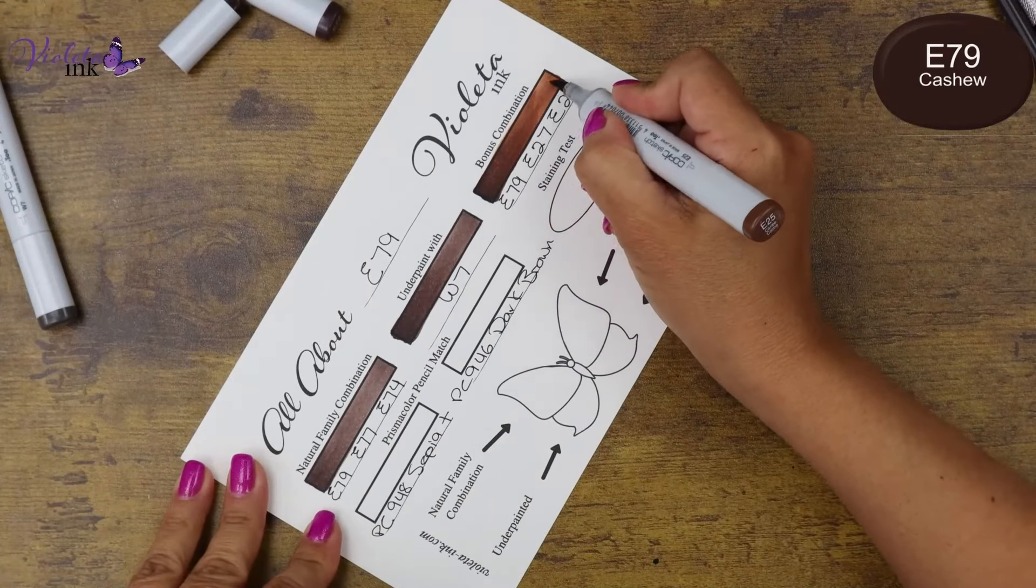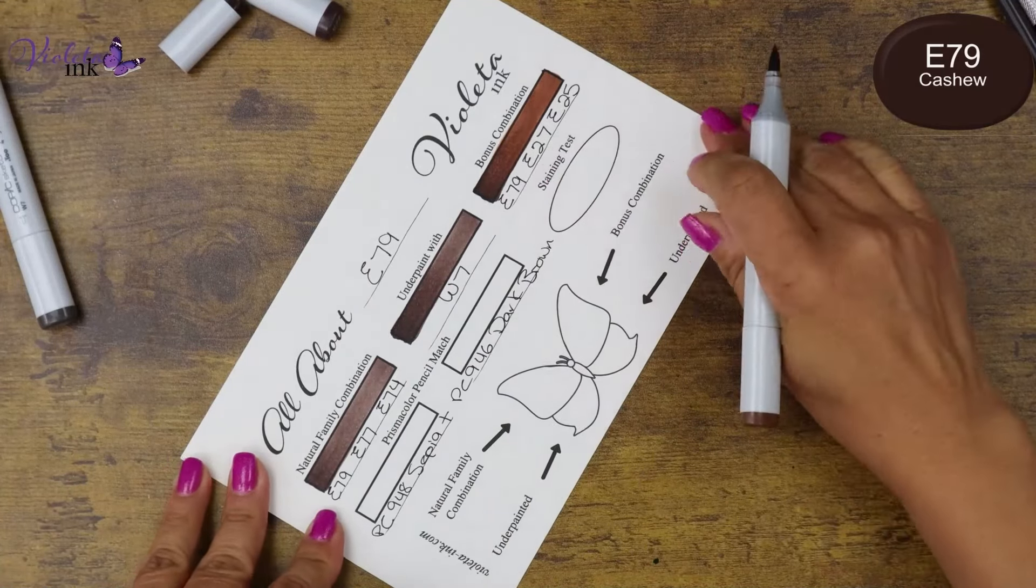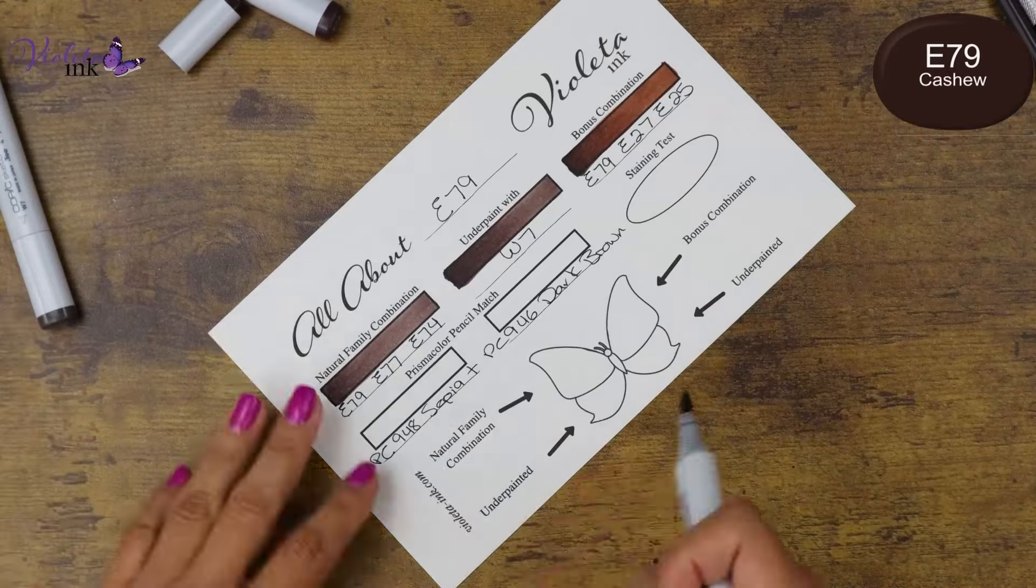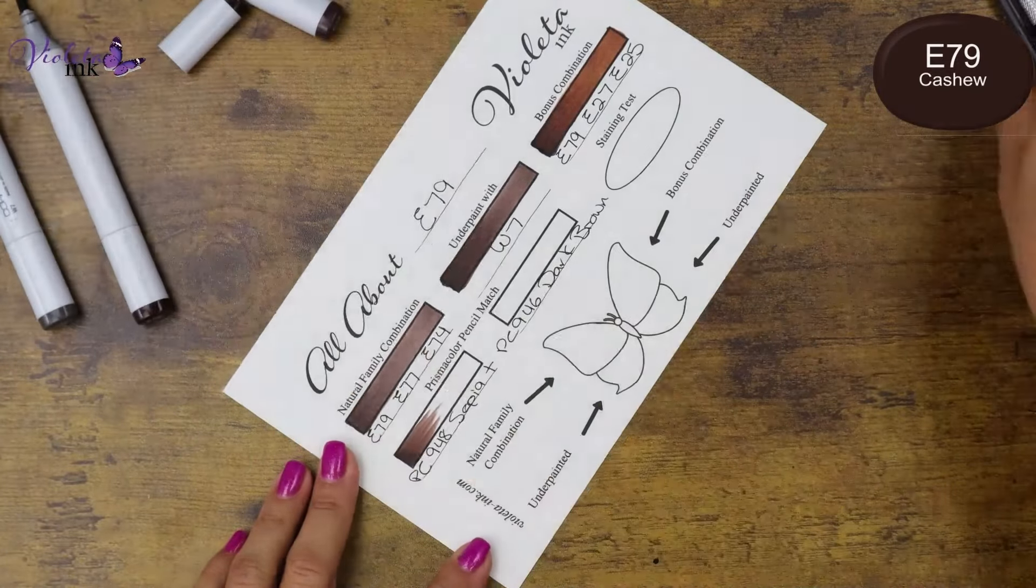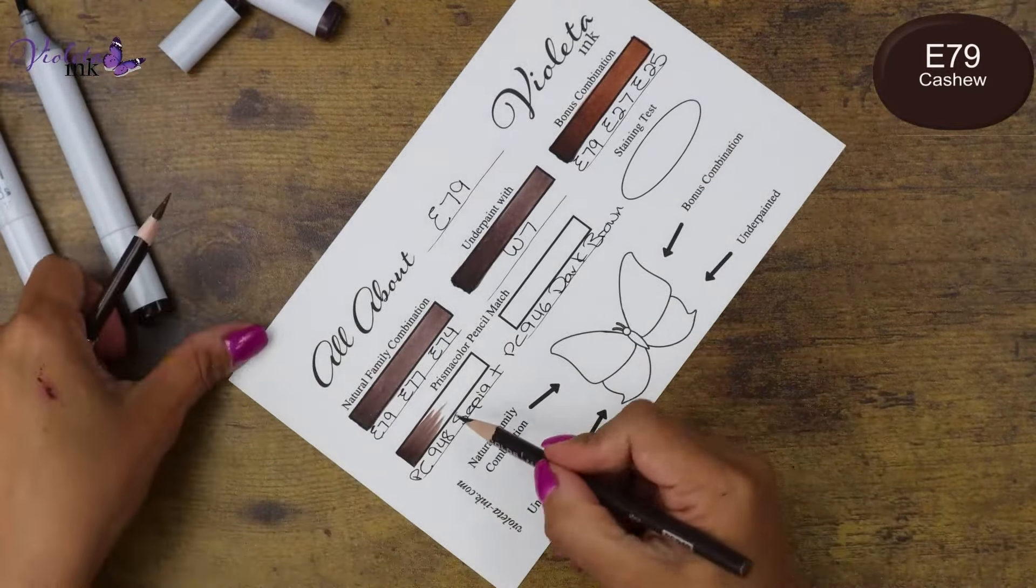You can see my markers are very very juicy. So when they're very juicy it's easier to blend. Just make sure your markers are more than 14 grams.